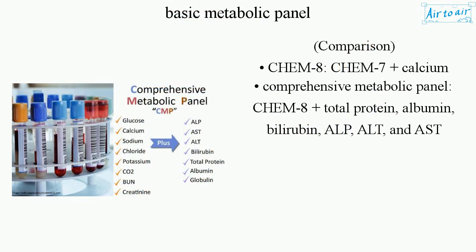Comparison: CHEM-8 is CHEM-7 plus Calcium. Comprehensive Metabolic Panel is CHEM-8 plus Total Protein, Albumin, Bilirubin, ALP, ALT, and AST.